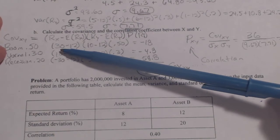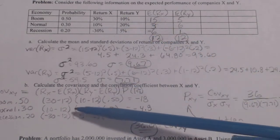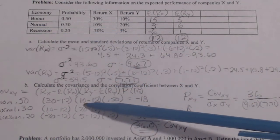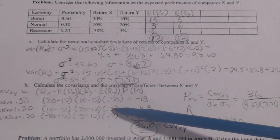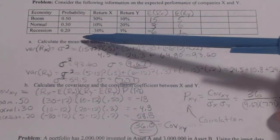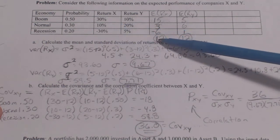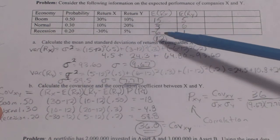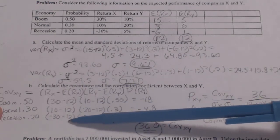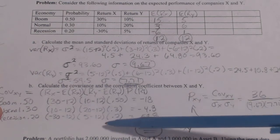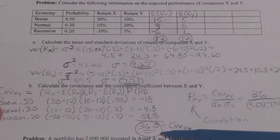For the first state: (30 minus 12) for X times (10 minus 12) for Y times 0.5. For the second state: (10 minus 12) for X times (20 minus 12) for Y times 0.3. Note that this doesn't square, so we can get negative numbers — but a negative times a negative makes a positive. Multiplying and summing all states gives a covariance of 36.0.